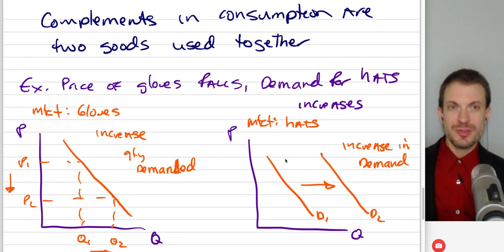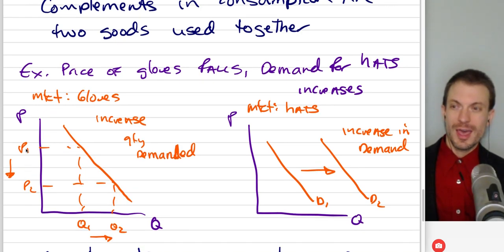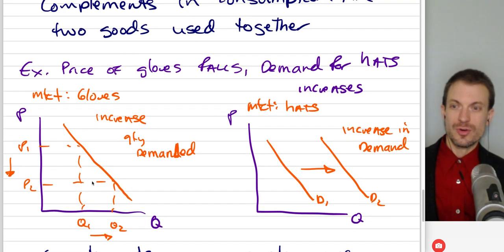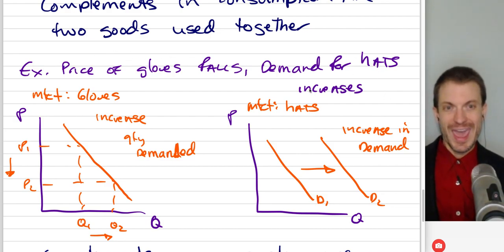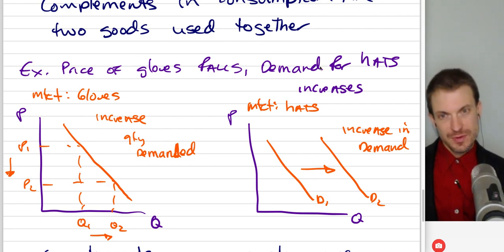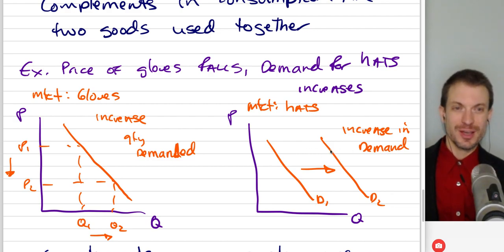For complements in consumption — two goods used together — suppose the price of gloves falls. From the perspective of gloves, we get an increase in quantity demanded: at a lower price, you buy more, and price changes can only affect quantity. From the perspective of hats, this is a change in the price of a related good used together, so we get an increase in demand for hats that you wear alongside gloves — a rightward shift in demand.